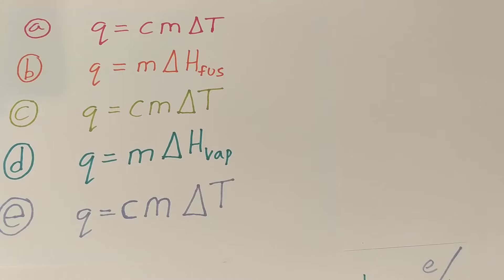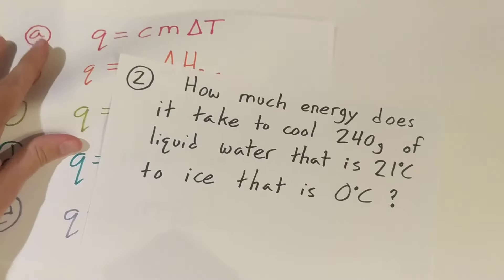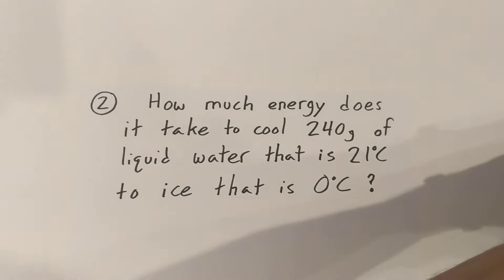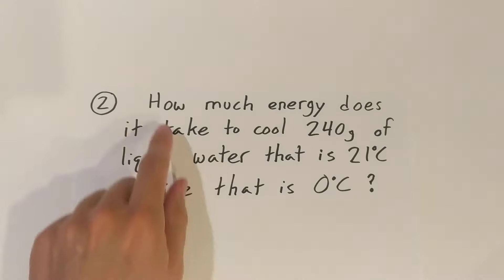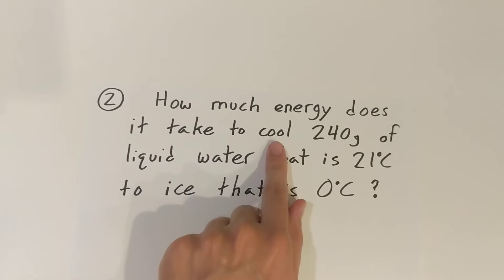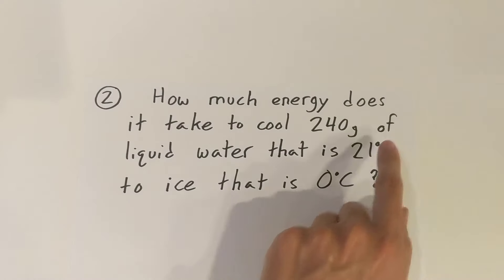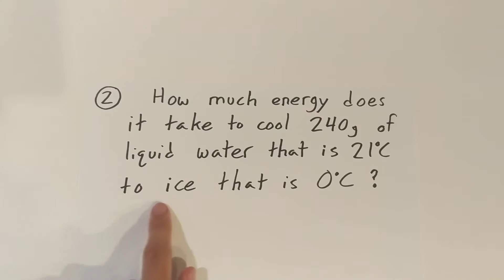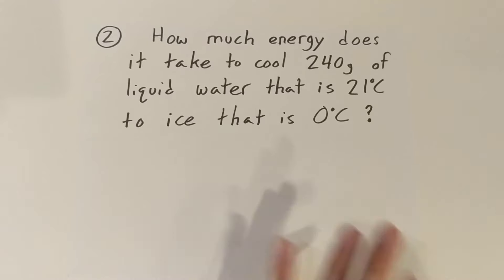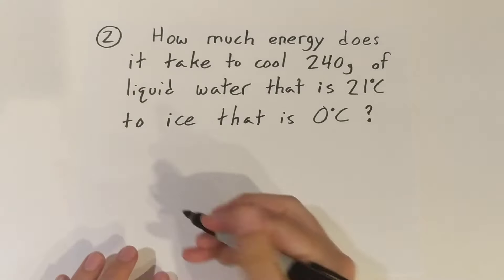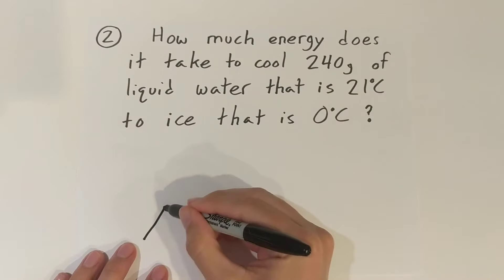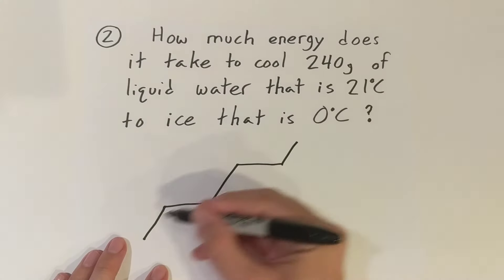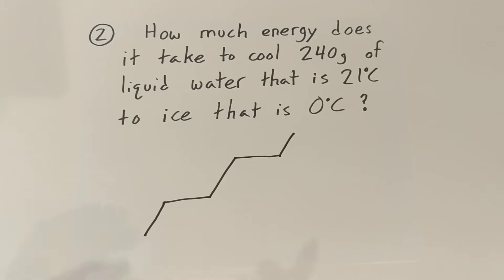Let's jump into our first question, number two, and figure out what's going on here. It says: how much energy does it take to cool 240 grams of liquid water at 21 degrees Celsius to ice at zero degrees Celsius? I'm going to quickly draw a little sketch here that has those five parts.